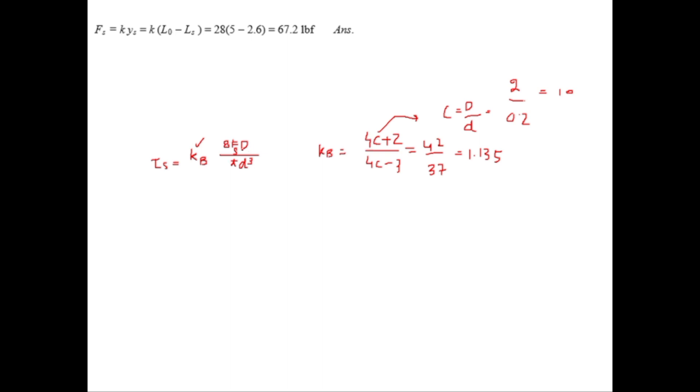Let's find the factor of safety which can be represented by N. Design factor equals factor of safety. ND equals torsional yield strength divided by tau s. Here we don't know the torsional yield strength. SSY equals some percentage of SUT. The percentage value will be taken from table 10.6 and SUT equals a divided by d to the power m. a and m values are taken from table 10.4.